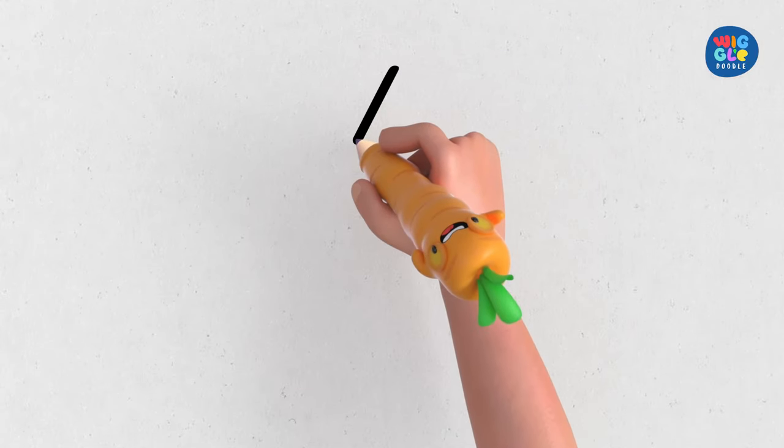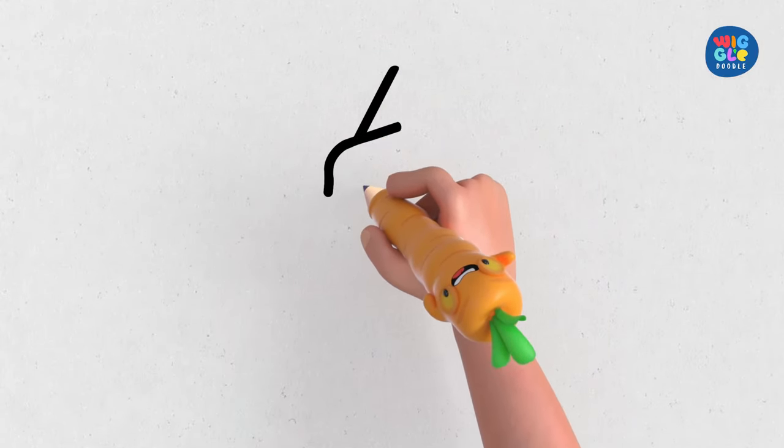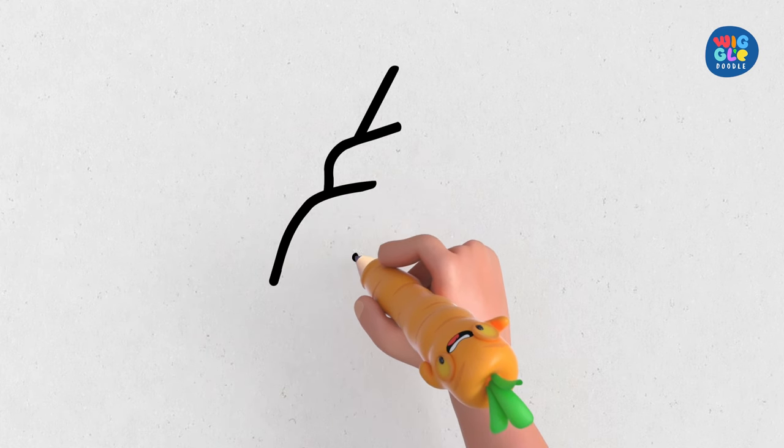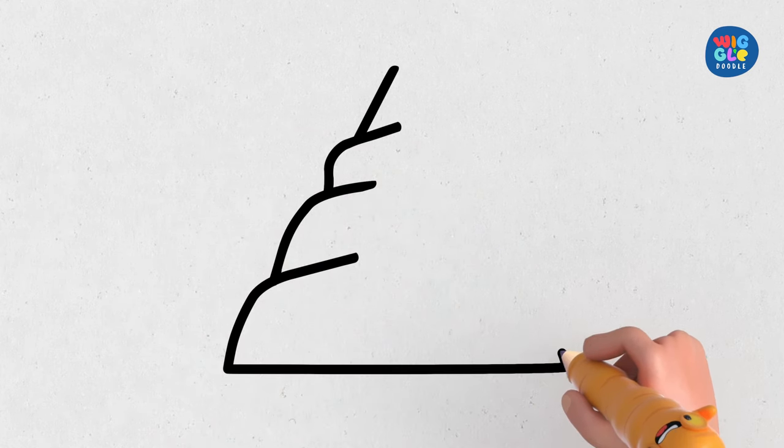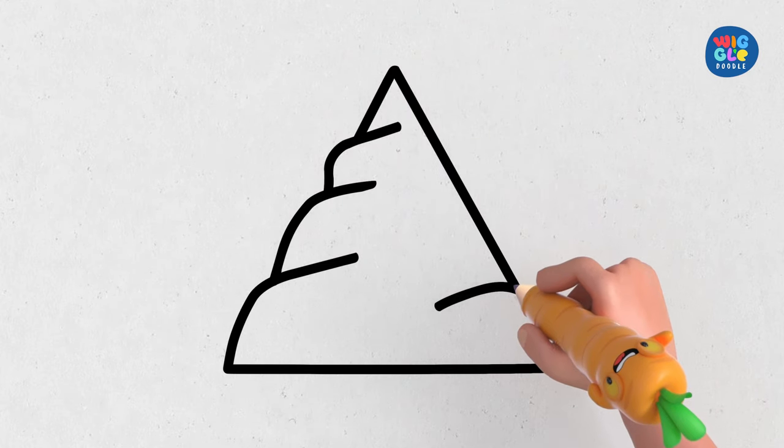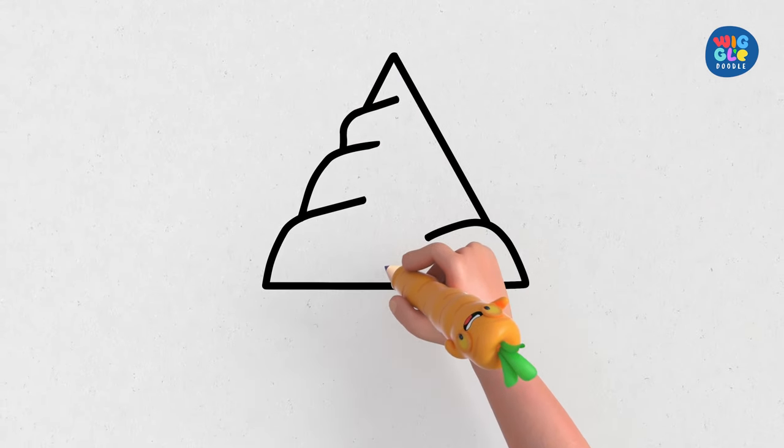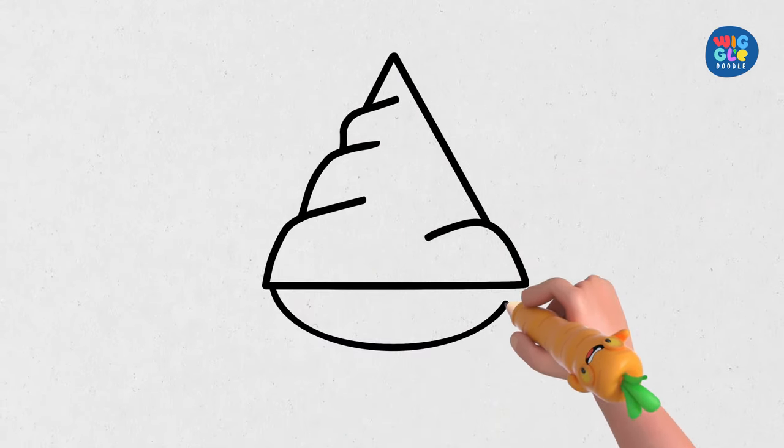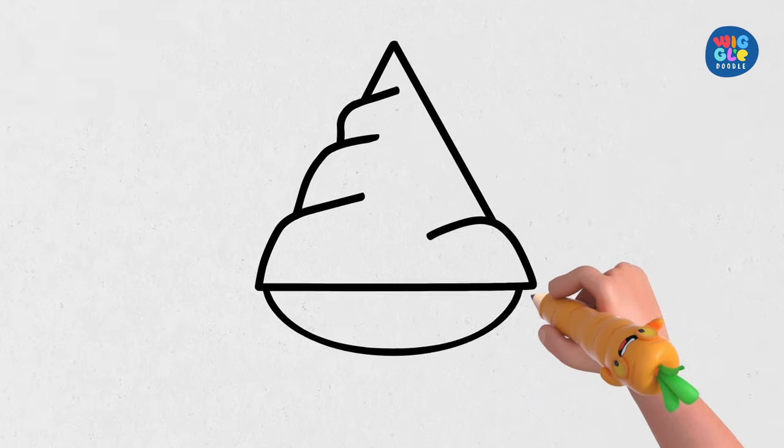First, draw its shell. The shell can be shaped like a triangle, but it can also take on many different forms. Draw a half circle for its body. Two circles for its eyes.